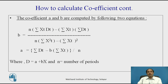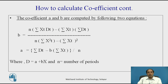The coefficients a and b are calculated by two equations. b = [n·(Σxt·dt) − (Σxt)·(Σdt)] / [n·(Σxt²) − (Σxt)²]. The value of a is found by: a = [Σdt − b·Σxt] / n, where d = a + bx and n is the number of periods for which data is available.